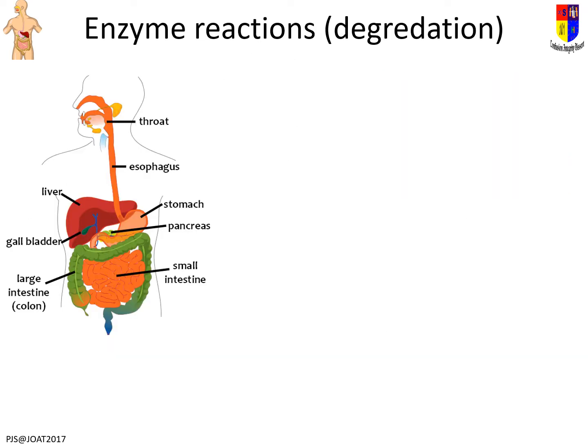Here is your basic digestive system. At the top you've got your mouth where you chew your food, then food goes down into the throat where you swallow it. There are two different pipes at the back of your throat — one to your lungs and one to your stomach. A little flap controls which one is open. This is why it's really important not to talk with your mouth full.